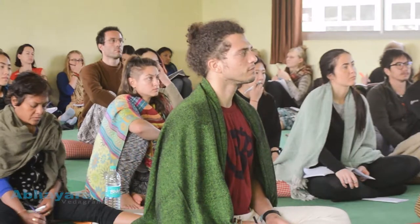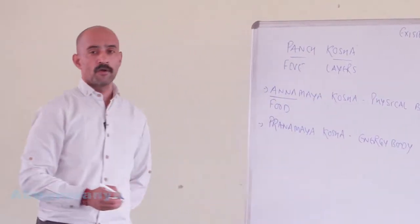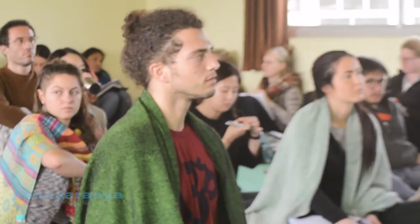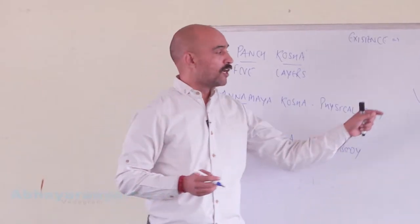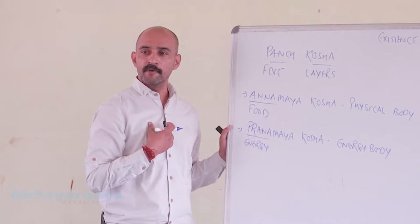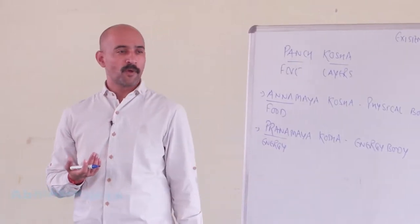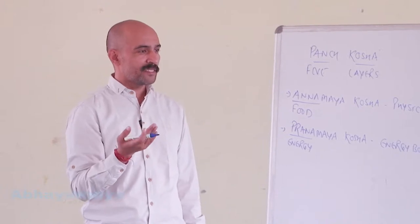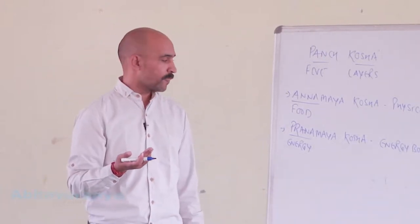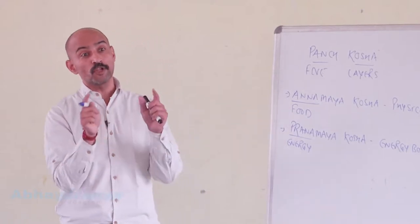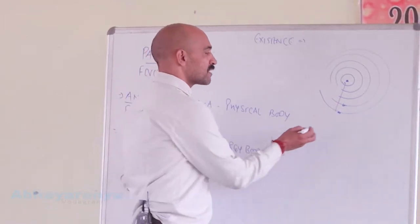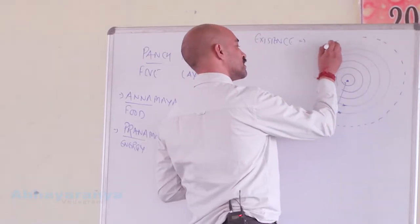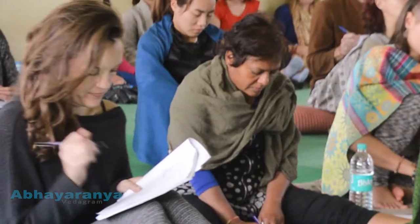Pranamaya Kosha is known as our energy layer or energy body. Prana refers to energy. An interesting thing about this layer is that it is not just inside but also outside. When we break down food through digestion, we get ATP — adenosine triphosphate — the energy molecule. So inside the food there is energy, but outside the food there is also energy. This means Pranamaya Kosha, the energy body, extends beyond the inside, and this is known as our aura.